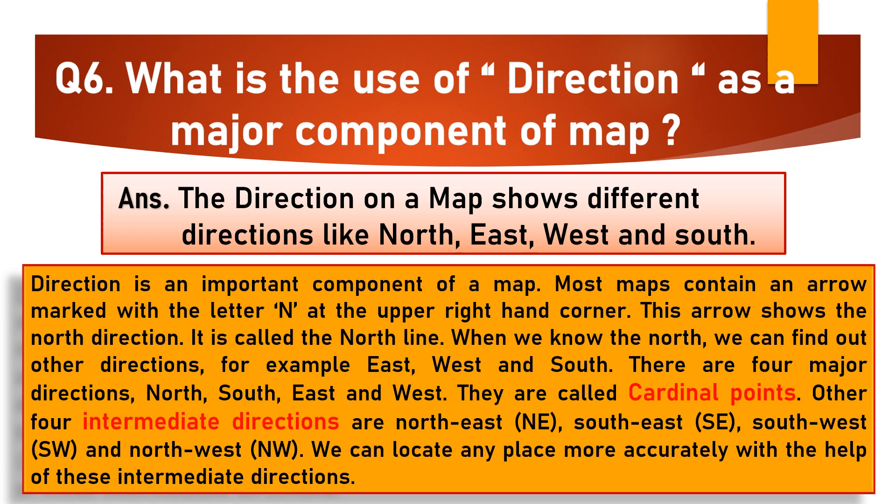Other four intermediate directions are north-east, south-east, south-west and north-west. We can locate any place more accurately with the help of these intermediate directions.